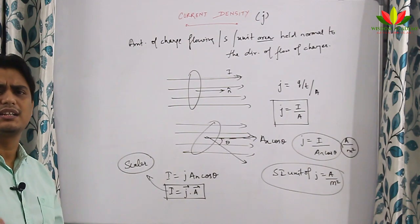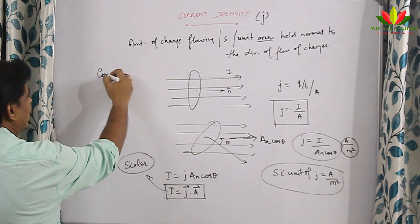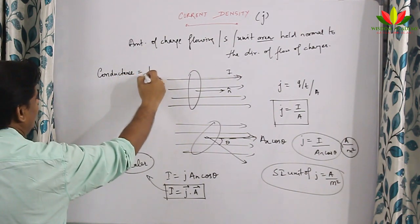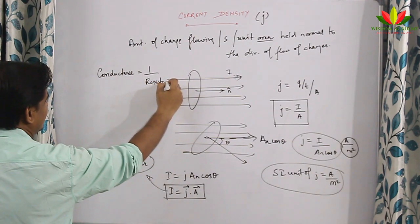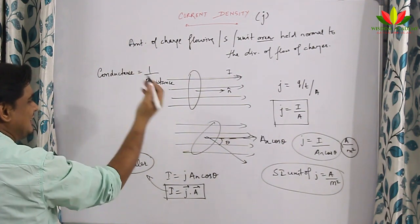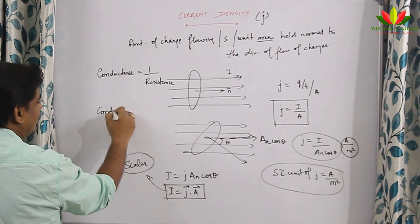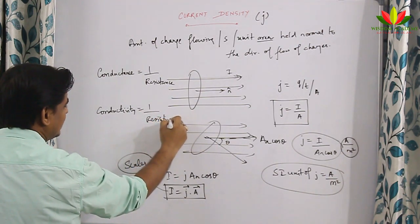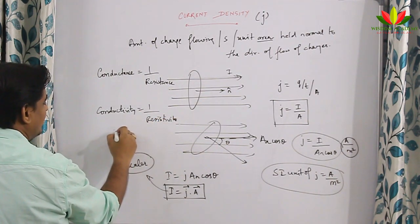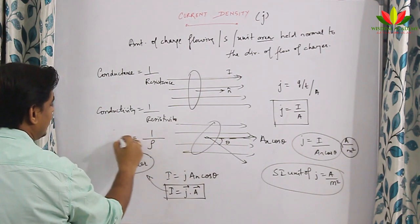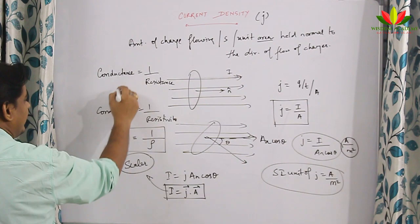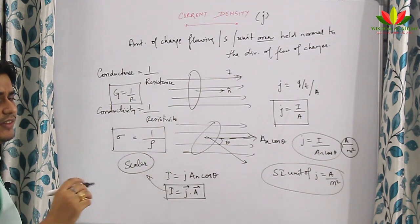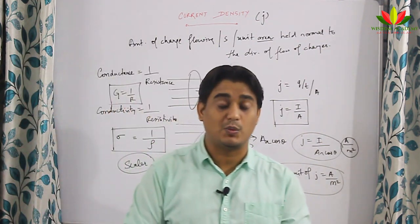There are also quantities called conductance and conductivity. Conductance is the reciprocal of resistance — G equals 1 by R. Similarly, conductivity is the reciprocal of resistivity — sigma equals 1 by rho. So conductance G is 1 by R, and conductivity sigma is 1 by rho.